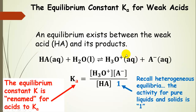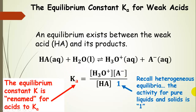Remember, the equilibrium constant expression is products over reactants — so the concentration of hydronium multiplied by the concentration of the conjugate base. Both of those coefficients are 1, so they're both to the first power. That's going to be over reactants, the concentration of the weak acid. Remember that the activity for a pure liquid or solid is 1, from heterogeneous equilibria. So here we have an equilibrium constant expression for a weak acid in solution.